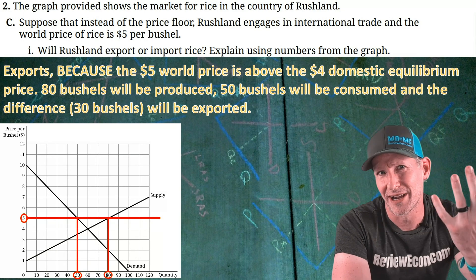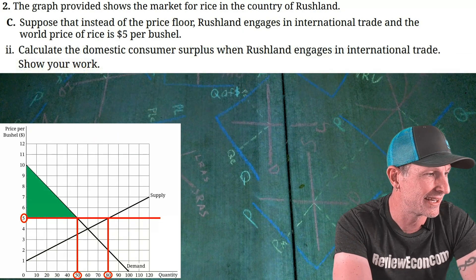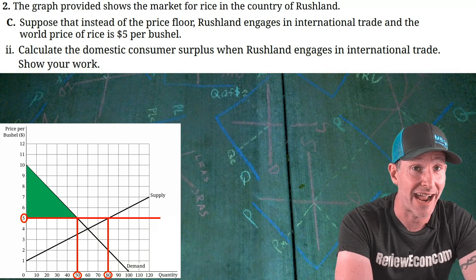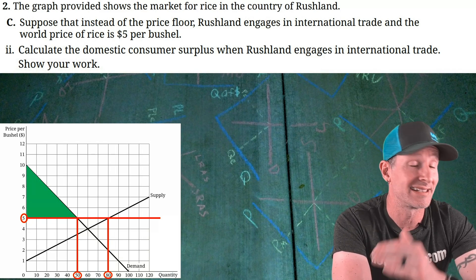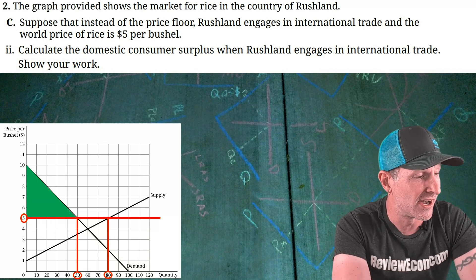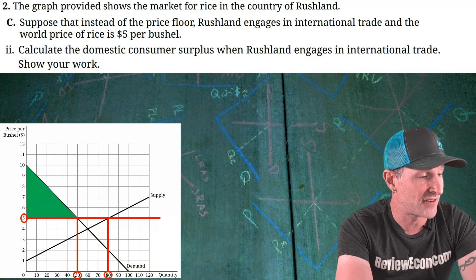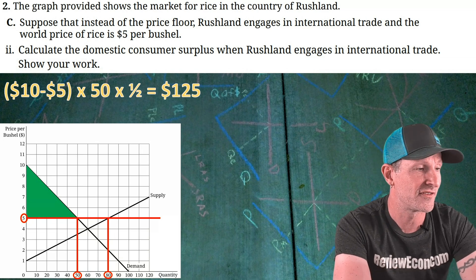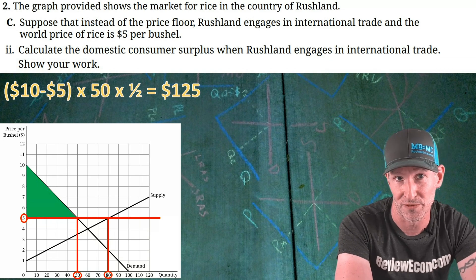For part C double I, we calculate consumer surplus when Rushland engages in international trade. That triangle of consumer surplus goes from the $5 world price up to the demand curve over a quantity of 50. Height is 10 − 5 = $5, base is 50 units: 5 × 50 × ½ = $125 worth of consumer surplus.